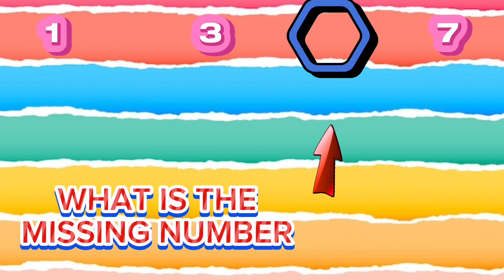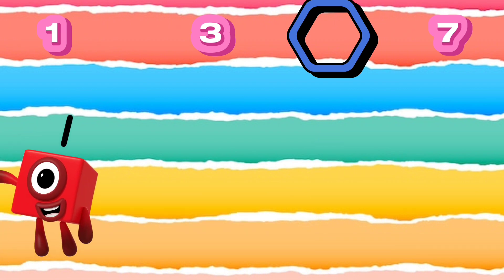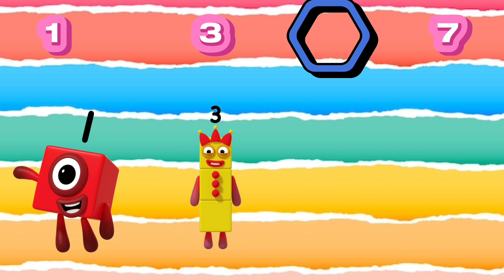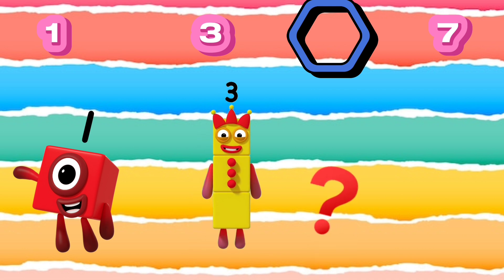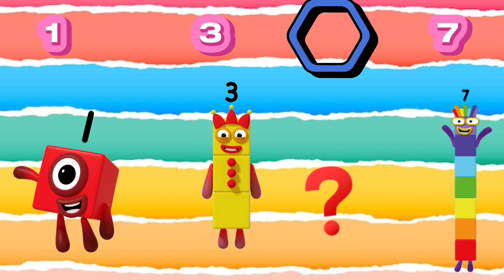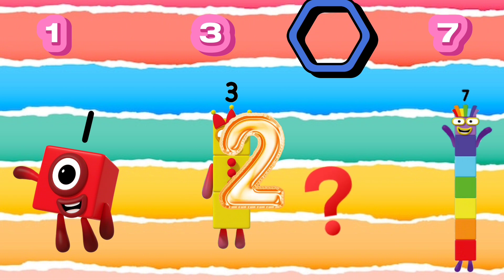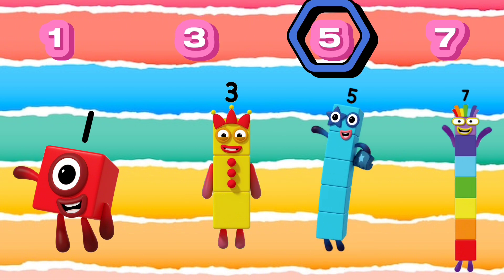What is the missing number? 1, 3, 7. The missing number is 5. The number sequence is 1, 3, 5, 7.